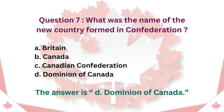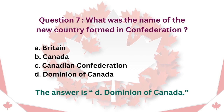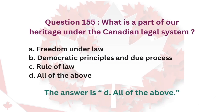Question 7: What was the name of the new country formed in Confederation? A. Britain. B. Canada. C. Canadian Confederation. D. Dominion of Canada. The answer is D. Dominion of Canada.